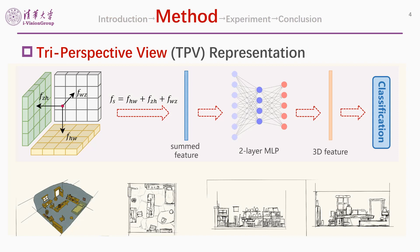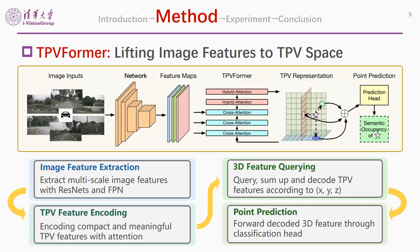Our TPV representation consists of three orthogonal planes, each describing the 3D scene from one perspective. To obtain the semantic prediction of a query point in the 3D space, we first project it onto the three planes and retrieve the corresponding features by interpolation. We then aggregate them by summation and forward the summed features through a two-layer MLP to generate the final 3D feature.